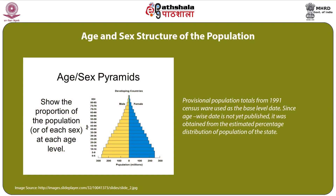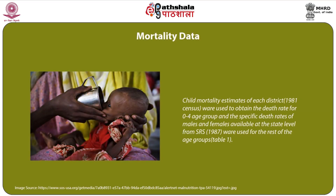Regarding age and sex structure of the population, provisional population totals from the 1991 census were used as the base level data. Since age-wise data was not yet published at that time, it was obtained from the estimated percentage distribution of population of the state. For mortality data, child mortality estimates of each district from the 1981 census were used to obtain the death rate for the 0 to 4 age group, and age-specific death rates of males and females available at the state level from SRS 1987 were used for the rest of the age groups, as presented in Table 1.